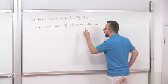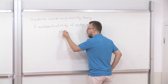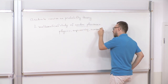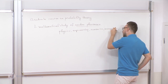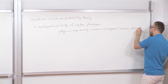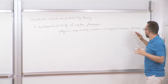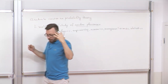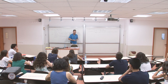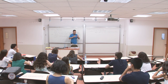It doesn't matter where this random phenomenon comes from — it can come from physics, biology, engineering, economics, management sciences, and also statistics. We need common techniques to deal with random phenomena, and that's why we have a course applicable to all those fields: the mathematical theory of probability.